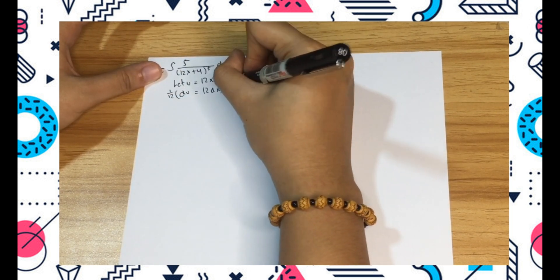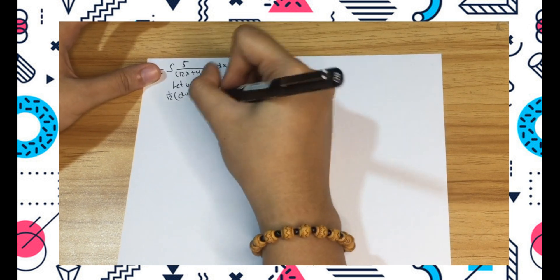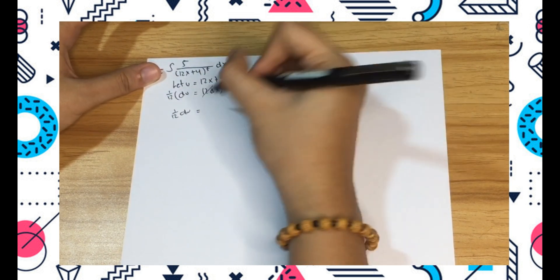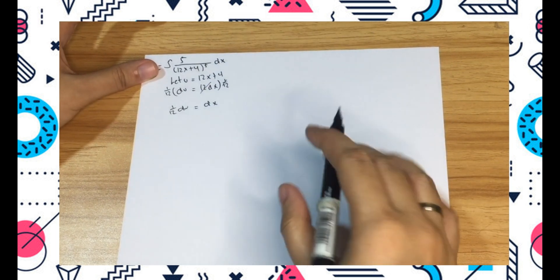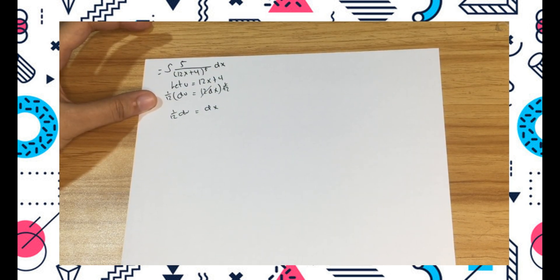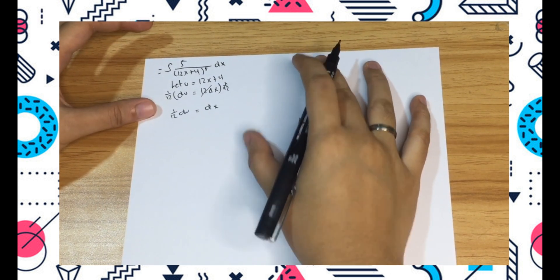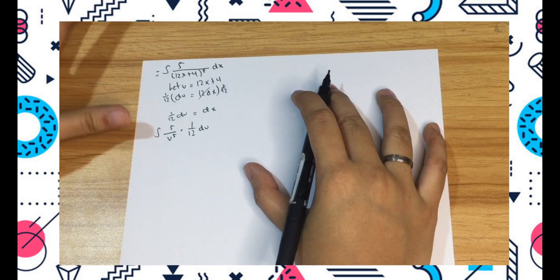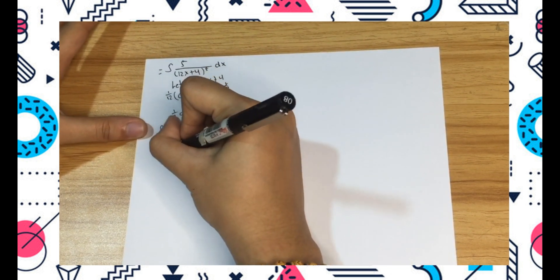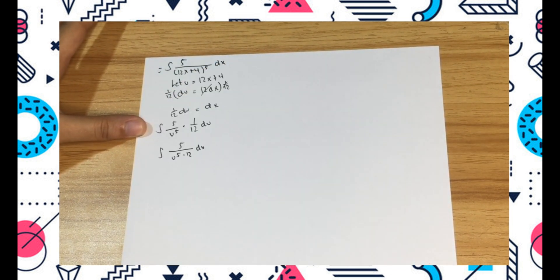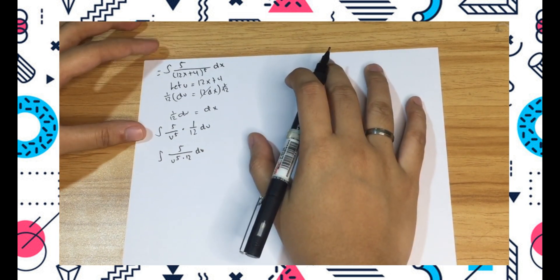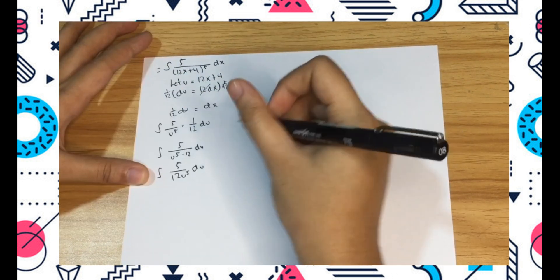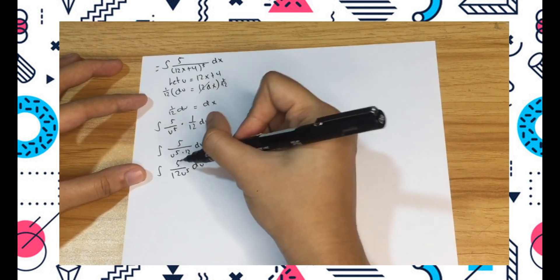We are going to divide by 12, so du over 12 equals dx. Now we rewrite the problem using u and du, then simplify. Multiply them together.